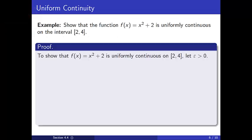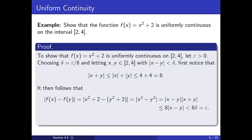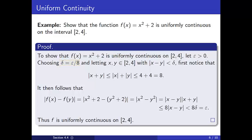For our proof, to show that f(x) = x² + 2 is uniformly continuous on [2, 4], let epsilon be positive. Choosing delta equal to epsilon over 8 and letting x and y be real numbers with |x − y| < delta, first notice that |x + y| ≤ 8 as computed earlier. It then follows that the distance between f(x) and f(y) equals |x² + 2 − (y² + 2)| = |x² − y²| = |x − y| · |x + y| ≤ 8|x − y| < 8 delta = epsilon. Thus f is uniformly continuous on [2, 4].